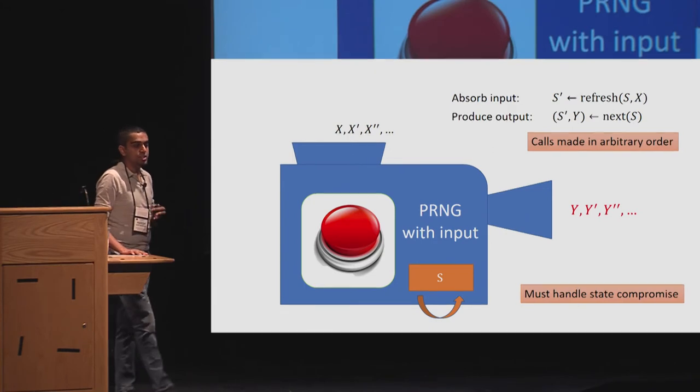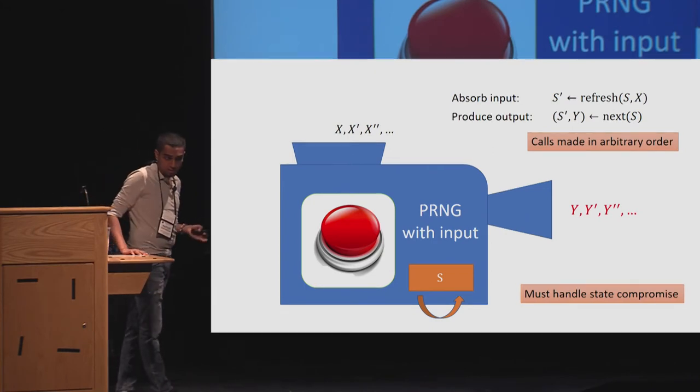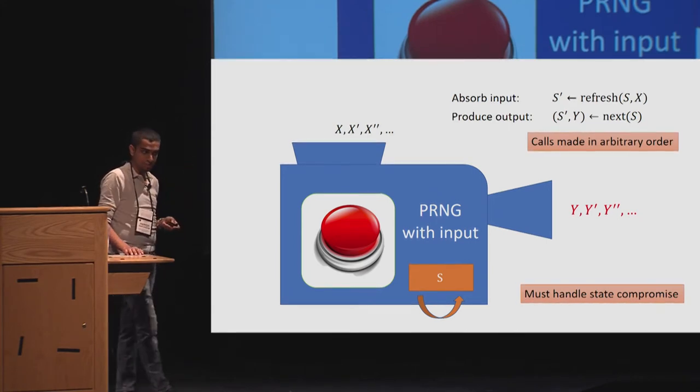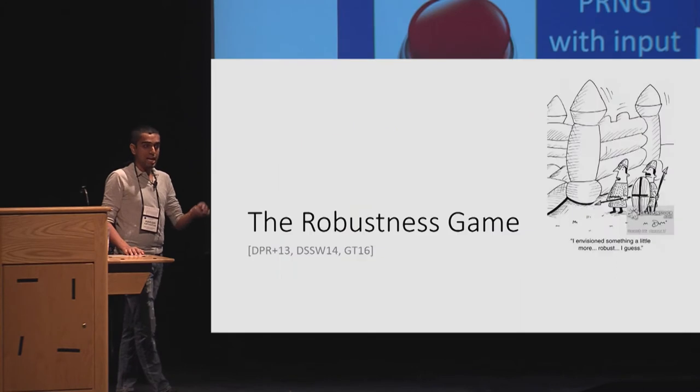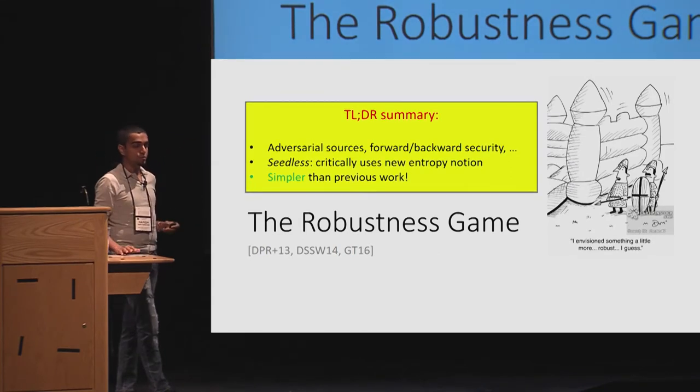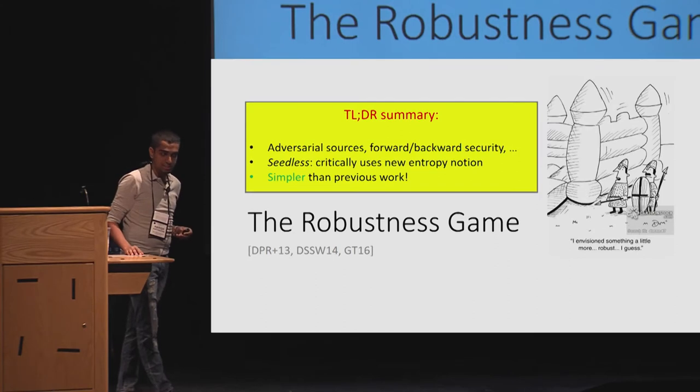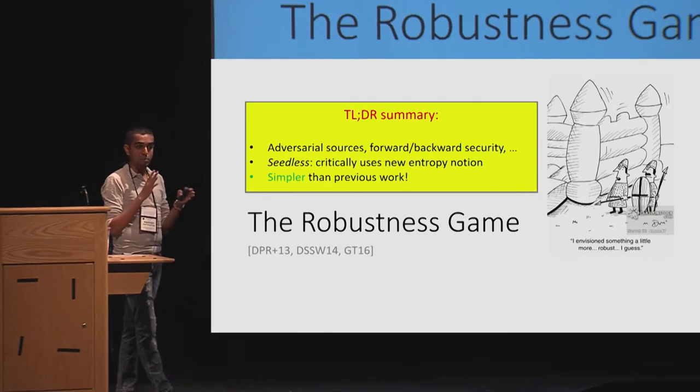But it needs to handle state compromise. What does it mean? The adversary can set it to a state of its choice. What the adversary can also do is, with practice, plan to compromise the state at any given point of time. So this is captured in the robustness game. But due to paucity of time, I'm going to just give you the high-level view. We actually show it for adversarial sources, the robustness game is modeled. We also deal with both forward-backward security.